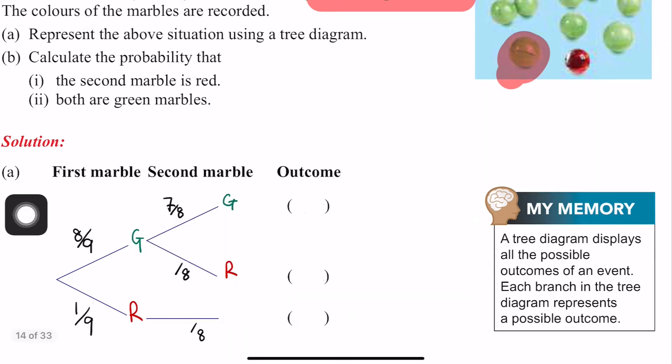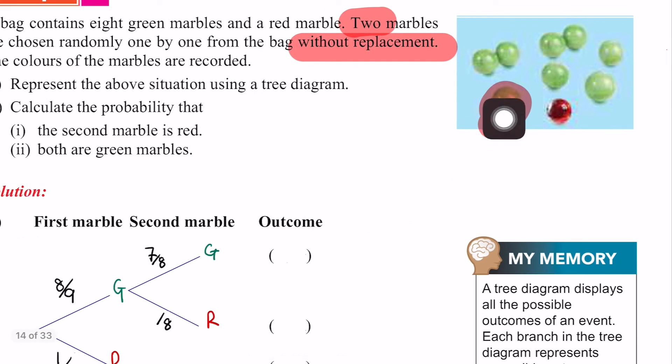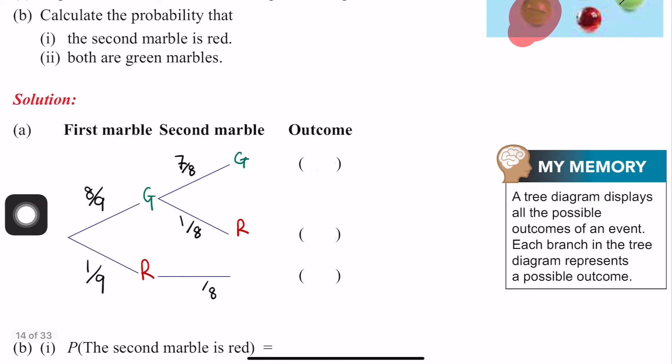After picking 1, how many green are left? 1, 2, 3, 4, 5, 6, 7. 7. How many red? Still 1. So, 1. This is if I pull out green first, then green second. First green, second red.